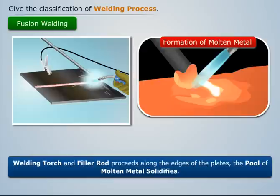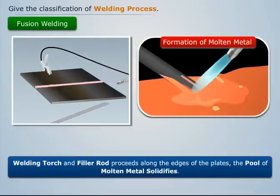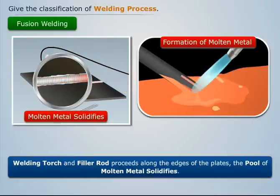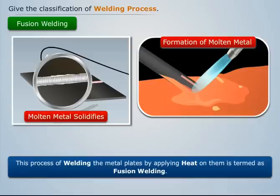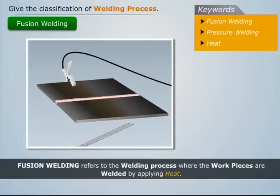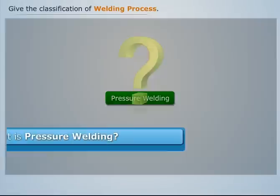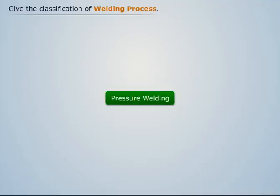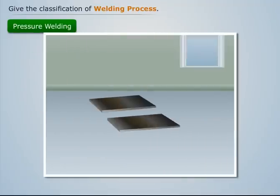As the welding torch and filler rod proceed along the edges of the plates, the pool of molten metal solidifies. This process of welding the metal plates by applying heat on them is termed as fusion welding. Fusion welding refers to the welding process where the work pieces are welded by applying heat.